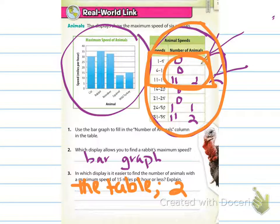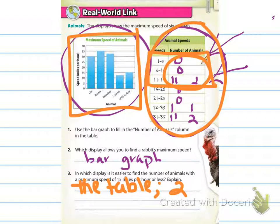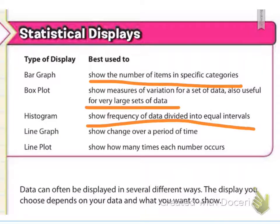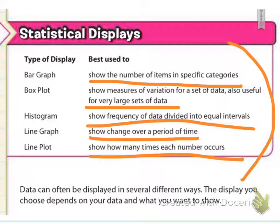Going back to this original example, you could make a bar graph if you want to know individual speeds, or you could make a histogram if you just wanted to know what the fastest speeds were, or how many went a certain speed or under a certain speed. They give you different guidelines to go by when deciding which display to use. You can use several different displays for some data, but sometimes certain ones give you more information than others.